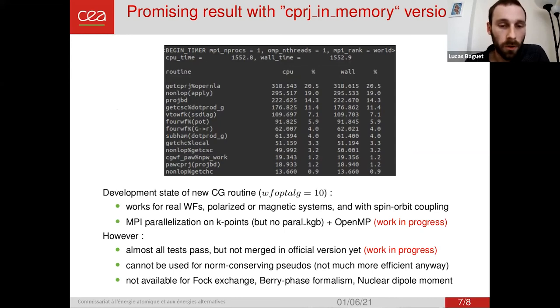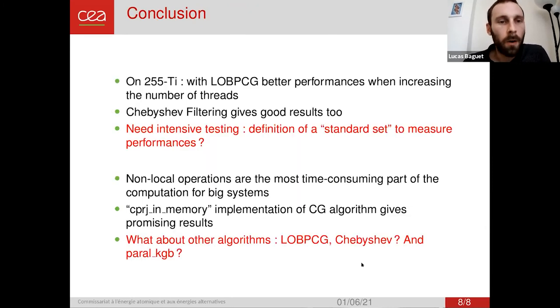However, almost all tests of the Abinit test farm passed, but it's not merged yet in the official version. I'm working on that. This version cannot be used for non-conserving pseudo, but actually I don't think it's very important, because I don't think the non-conserving version would be more efficient than the original one. And it's not available yet for Fock exchange, Berry phase formalism, and nuclear deployment. Even if for this part, I think the amount of work is not so big, but I'm lacking expertise on that field.